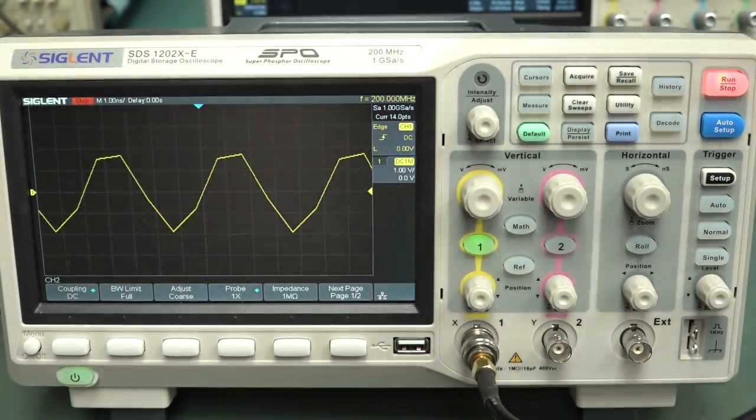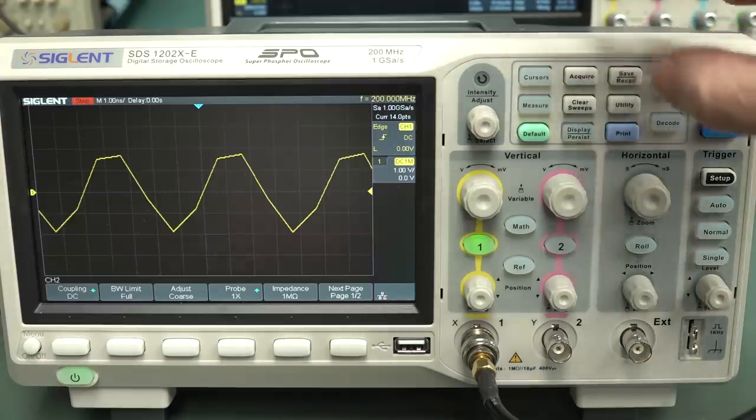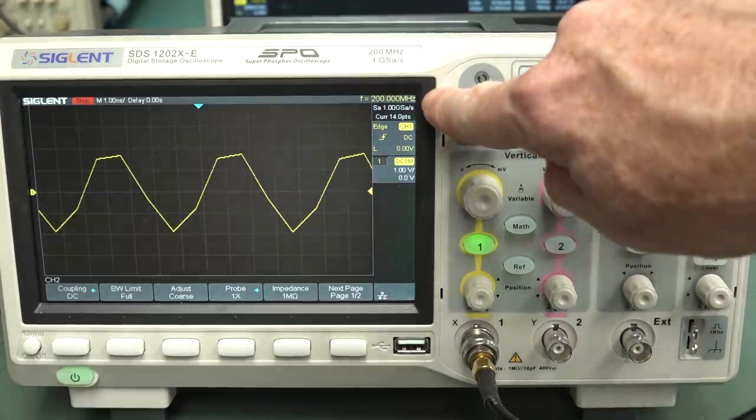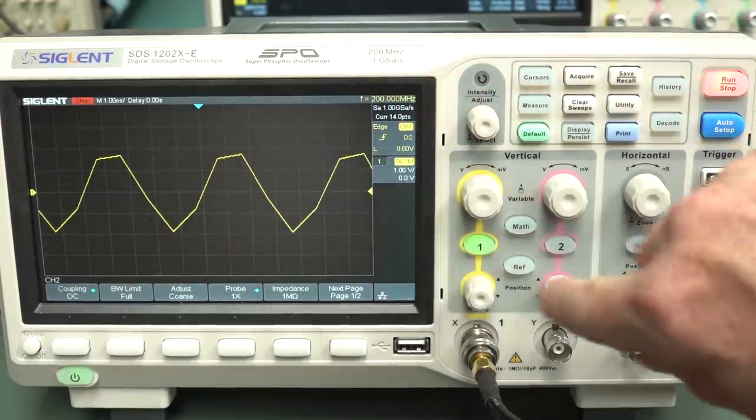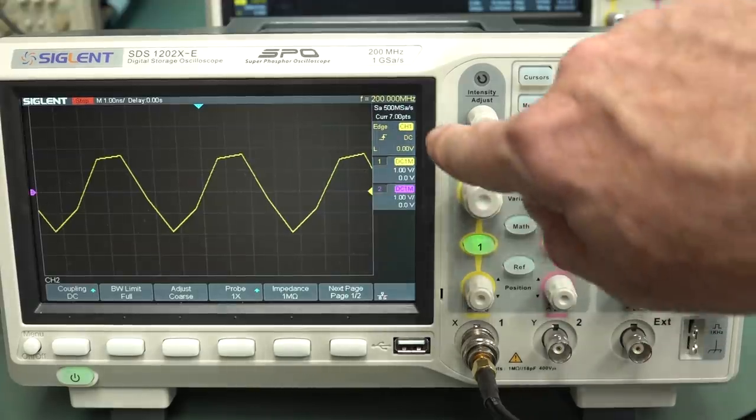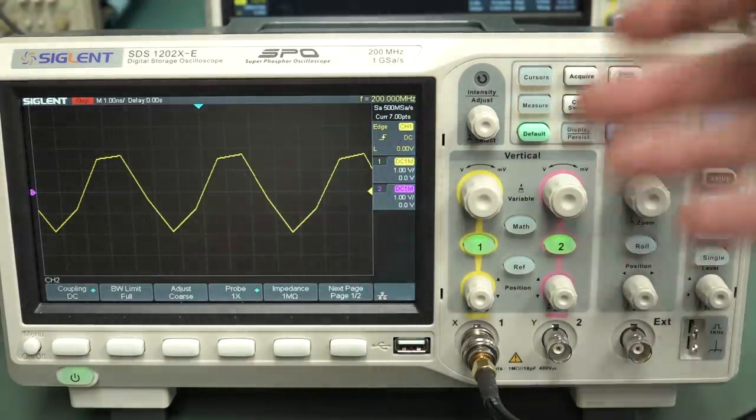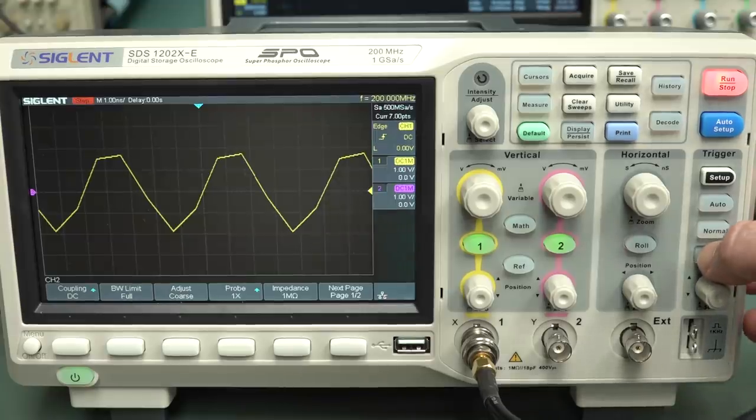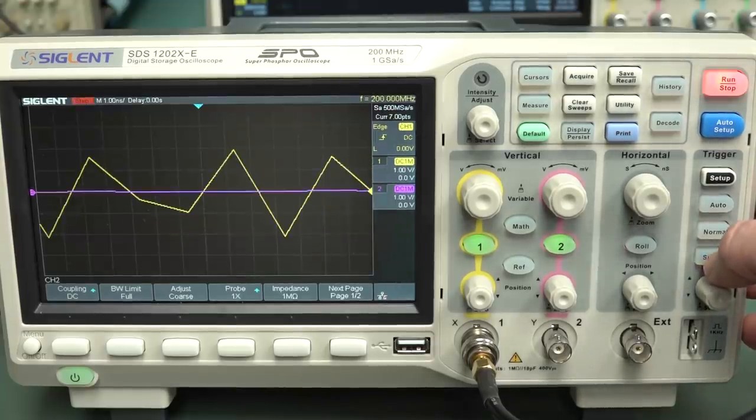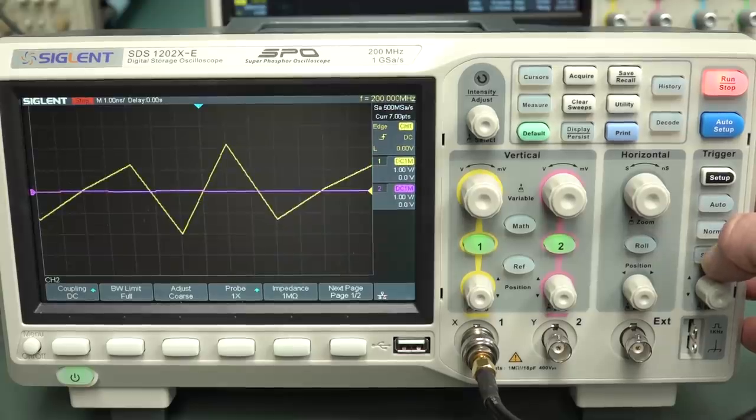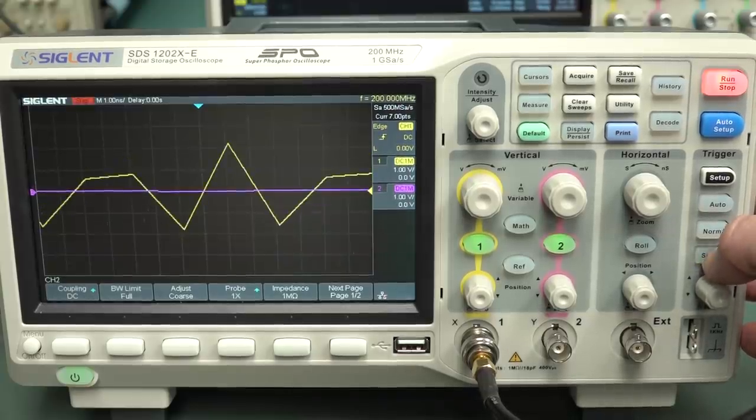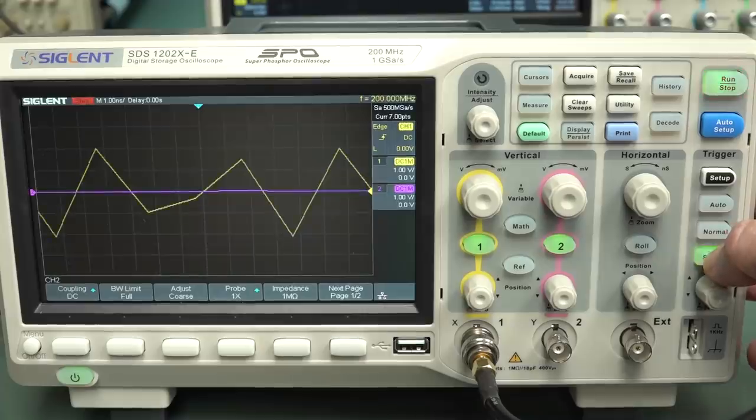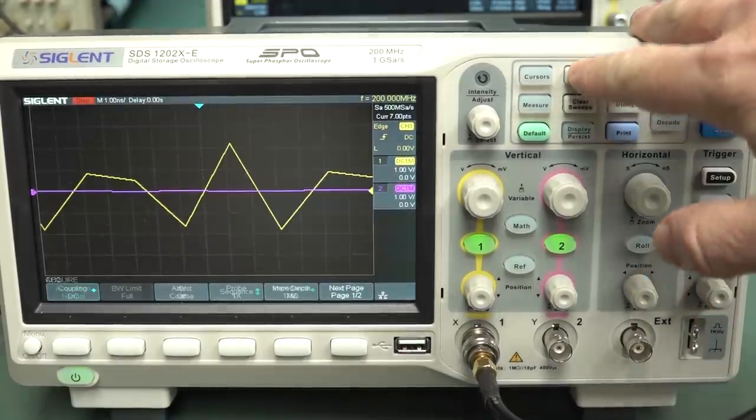And, as you should know, often with these scopes, when you enable the second channel, that sample rate will halve. So in this particular case, it drops down to 500 mega samples per second, and we're trying to sample a 200 megahertz signal with a 500 meg sample per second scope. And, of course, it looks worse. Because you've only got two and a half samples per cycle. Looks absolutely awful. That's useless. What is that, a triangle wave? Sawtooth?